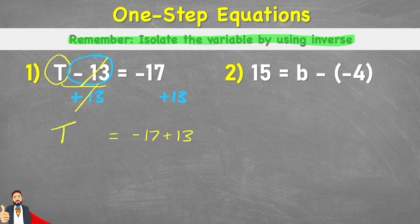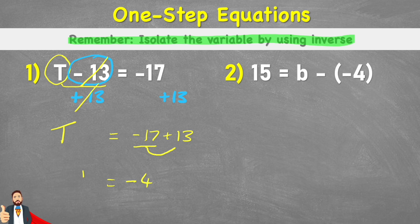Now this might be a little bit hard to get your head around, and if you're not too confident with negative numbers, I'm going to link a video that specifically goes through negative numbers in the description. But really what we need to think about is we're on negative 17 and we are adding a positive 13. So we're going to be coming back up the number line in a positive way and we will end up at negative 4. So therefore t equals negative 4.